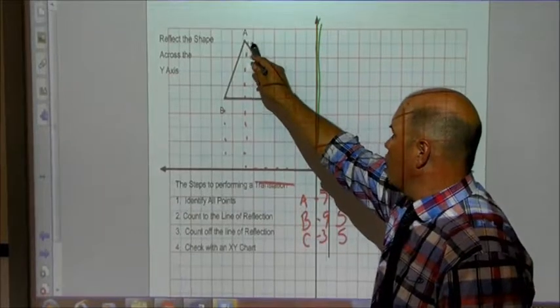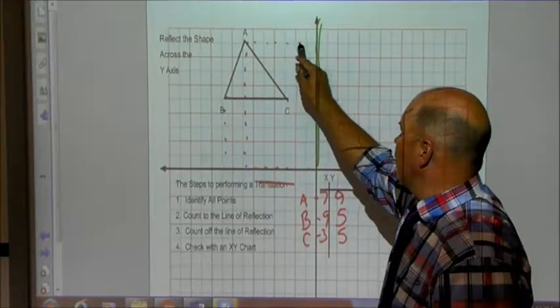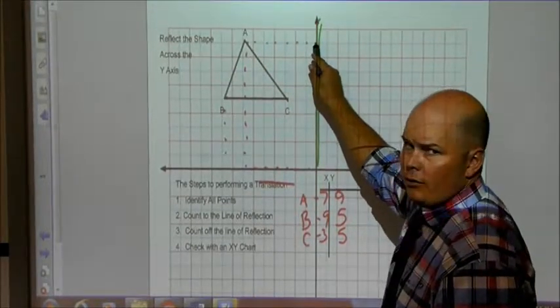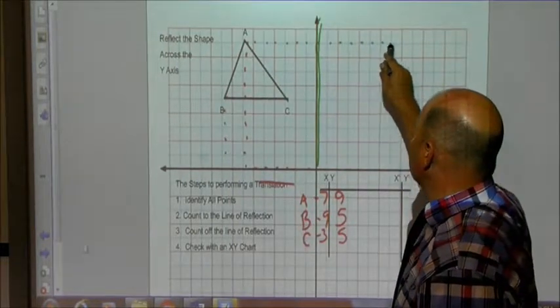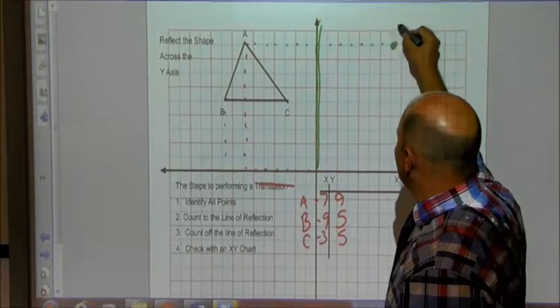So I'm going to take point A. I'm going to go 1, 2, 3, 4, 5, 6, 7 to my line of reflection. Now, I need to count 7 off it. 1, 2, 3, 4, 5, 6, 7. There's point A prime.